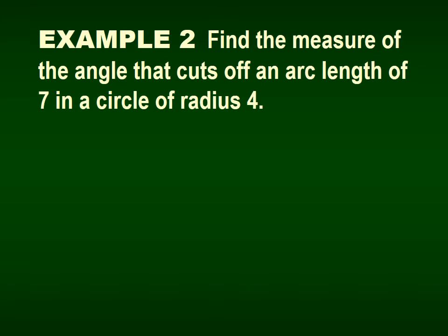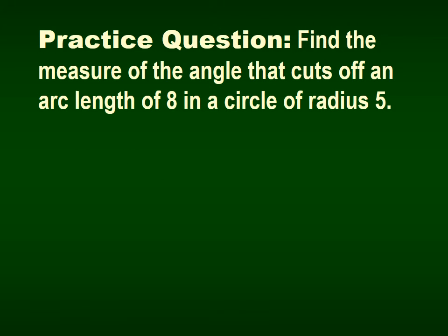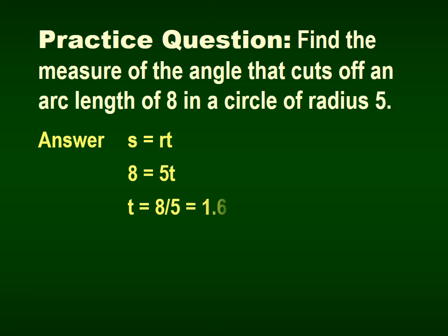Let's try two more examples. For an arc length of 7 inches in a circle of radius 4: s equals 7 and r equals 4, so dividing both sides by 4, t equals 1.75 radians. For an arc length of 8 in a circle of radius 5: s equals 8 and r equals 5, so dividing both sides by 5, t equals 1.6 radians. And that's all we have for today.